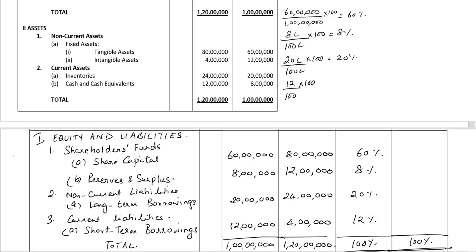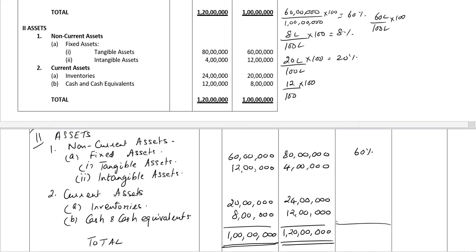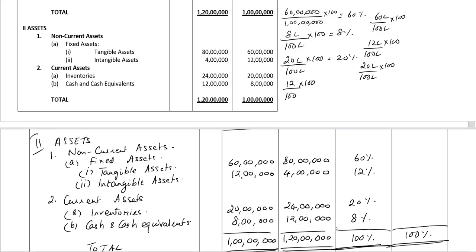Let's do the same thing for the asset side. Tangible assets: 60 lakh divided by 100 lakh multiplied by 100 is 60%. You need to equate the total of the balance sheet to 100%. In the case of intangible assets: 12 lakh divided by 100 lakh multiplied by 100 is 12%. In the case of inventories: 20 lakh divided by 100 lakh multiplied by 100 is 20%. Cash and cash equivalents: 8 lakh divided by 100 lakh multiplied by 100 is 8%. We have completed 31st March 2019.